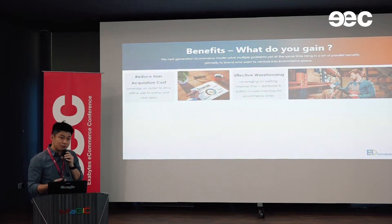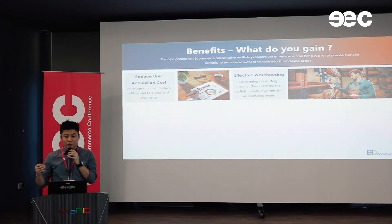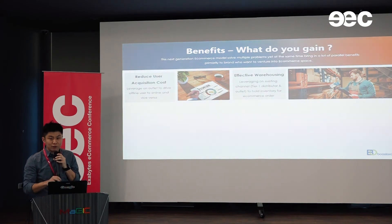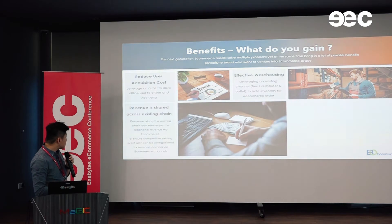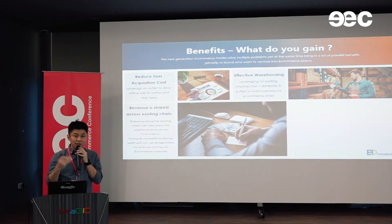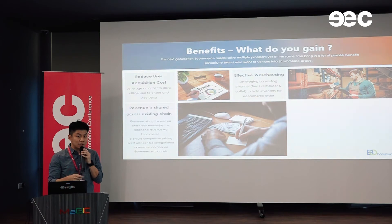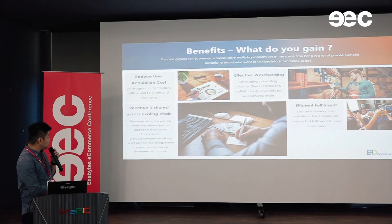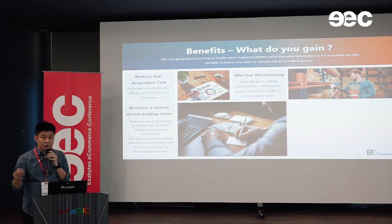The next benefit is about warehousing. Operating an online store with fulfillment is a little different from operating offline businesses. By leveraging your network of people who already carry your products, this enables an extremely effective warehousing mechanism. Going back to the channel conflict problem: if you already have an offline business and go online, they can cannibalize each other. But now by pulling offline properties into the online ecosystem, the revenue is shared with them — and trade terms can be renegotiated, still passing pricing benefits to consumers. Everybody is happy because revenue is shared across the existing supply chain.